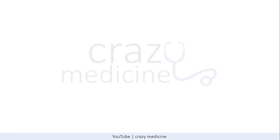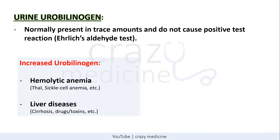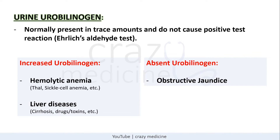Some important points about urine urobilinogen: normally, urobilinogen is present in trace amounts in urine as urobilin and does not cause a positive test reaction. Urobilinogen in urine is increased in hemolytic anemia and liver diseases like cirrhosis, drug-induced or toxin-induced liver injury. Absent urobilinogen is seen in obstructive jaundice.